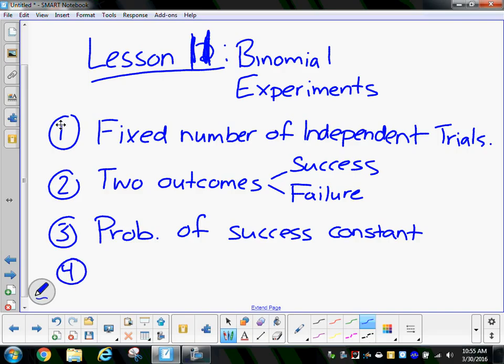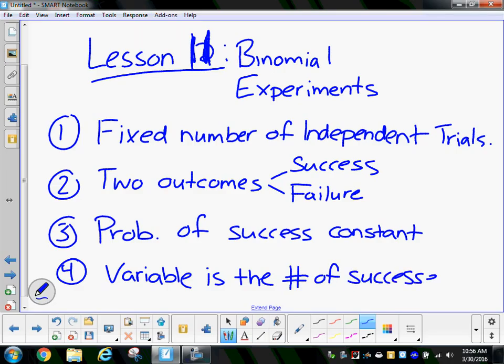And last but not least, we'll have a variable involved here. And the variable is the number of successes. If we have a situation where we have dependent events, it can't be binomial. So, a binomial experiment would be flipping a coin over time, that would be binomial? Right.